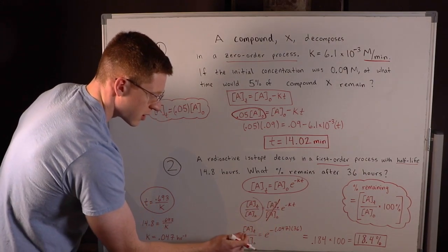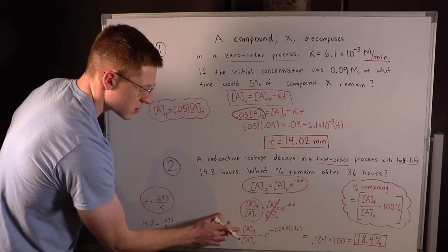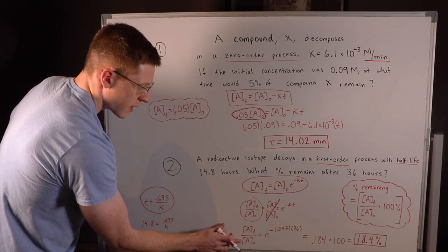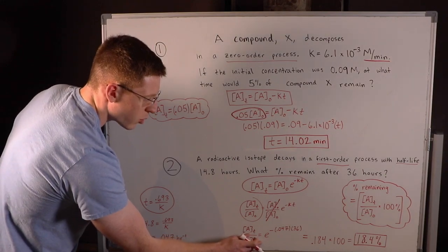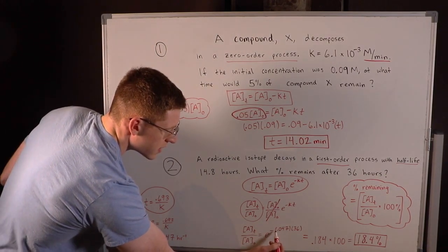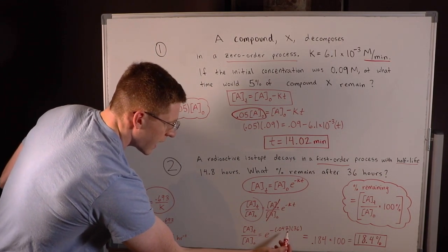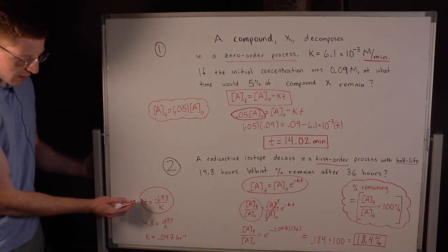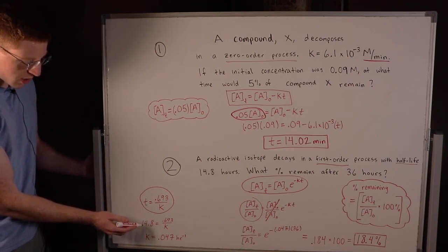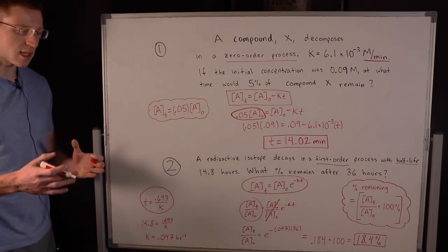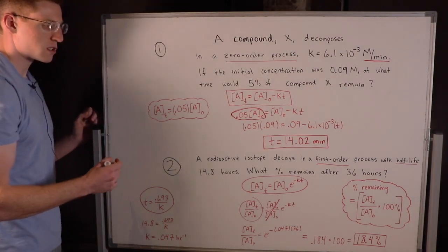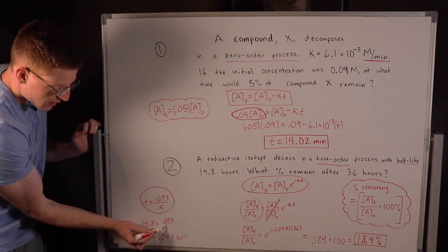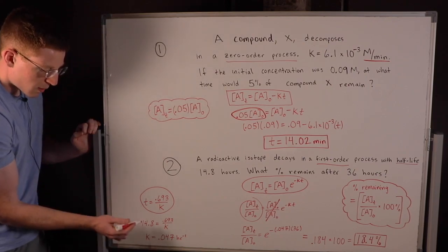That canceled this out, so I was left with [A]t over [A]₀ equals e⁻ᴷᵀ. I actually didn't have K though. I had to use the half-life formula to obtain it. So I was given the half-life t₁/₂ = 14.8 hours. That's the amount of time it takes for half of this radioactive isotope to disappear. Equals 0.693/K. Isolate K and you get 0.047.